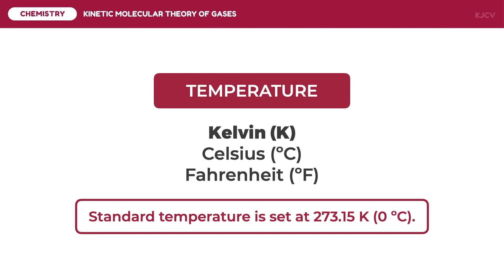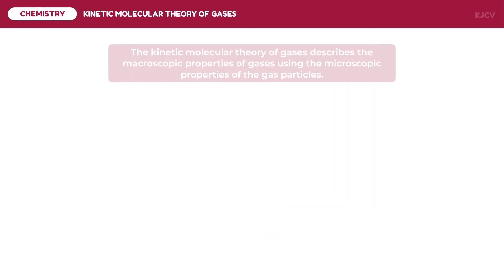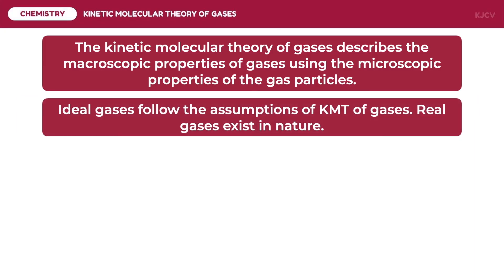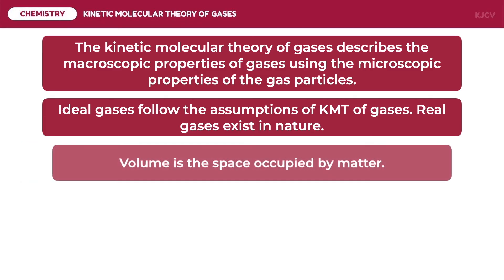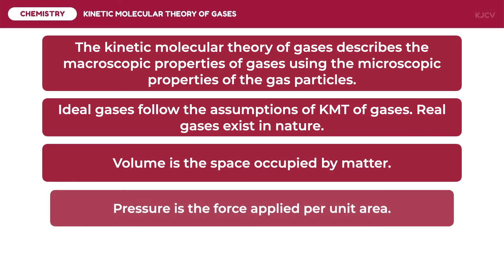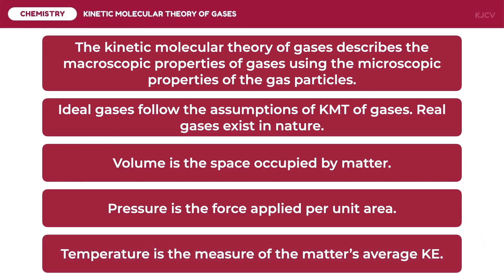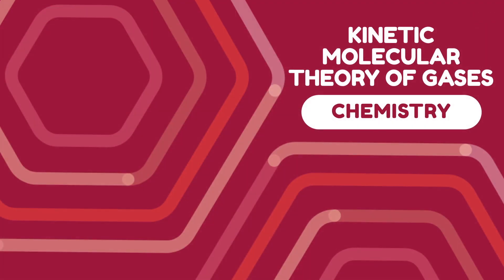We have now finished discussing the kinetic molecular theory of gases, the differences between ideal and real gases, and the properties of gases. Before we conclude this lesson, let us review the following key points. The kinetic molecular theory of gases describes the macroscopic properties of gases using the microscopic properties of the gas particles. Ideal gases follow the assumptions of the KMT of gases, and real gases exist in nature. Volume is the space occupied by matter. Pressure is the force applied per unit area. And lastly, temperature is the measure of the matter's average kinetic energy. And this ends our discussion on the kinetic molecular theory of gases.